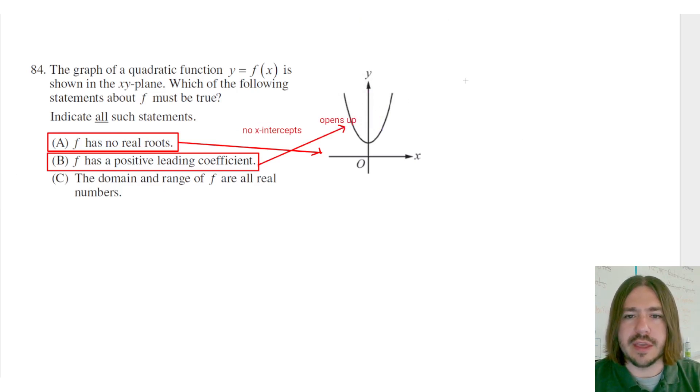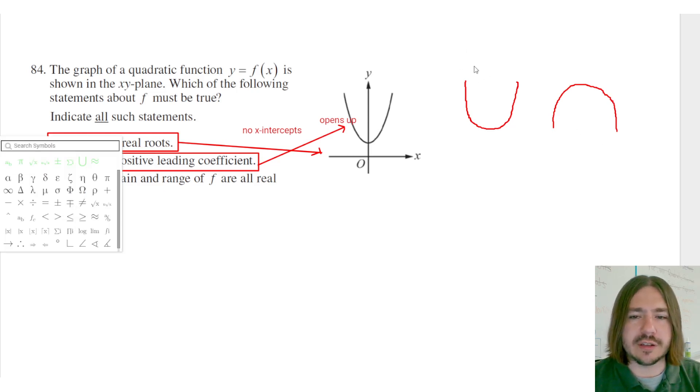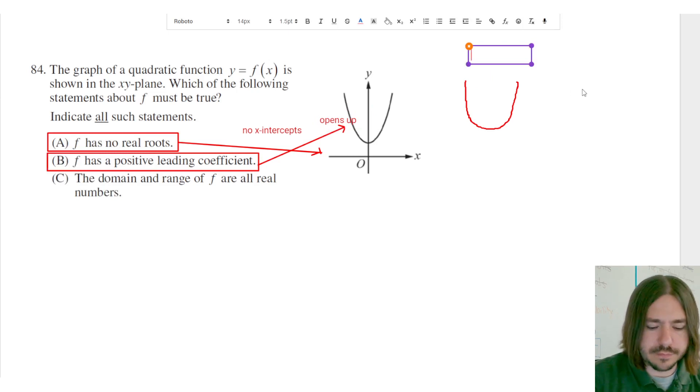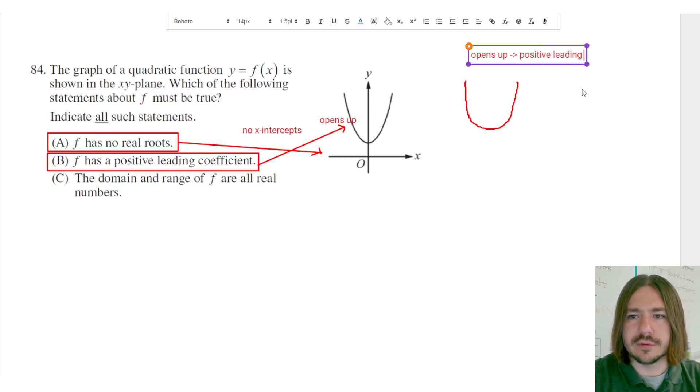What I mean by opening up is your parabola will either open up, meaning like it's making a U shape, or it's opening down, meaning it's like an upside-down U shape. So when you have a parabola that opens up, that means you're going to have a positive leading coefficient.